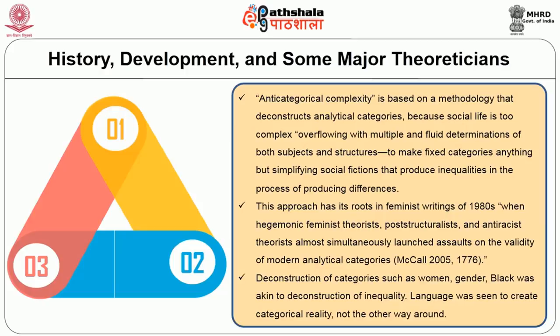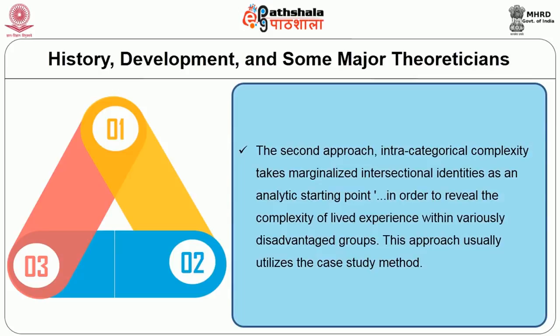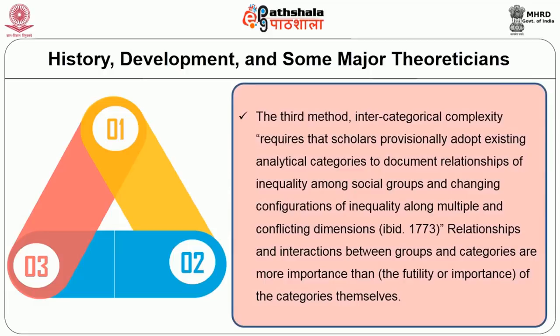The second approach, intracategorical complexity, takes marginalized intersectional identities as an analytic starting point in order to reveal the complexity of lived experience within variously disadvantaged groups. This approach usually utilizes the case study method. The third method, intercategorical complexity, requires that scholars provisionally adopt existing analytical categories to document relationships of inequality among social groups and changing configurations of inequality along conflicting dimensions. No single dimension of overall inequality can adequately describe the full structure of multiple intersecting and conflicting dimensions of inequality.